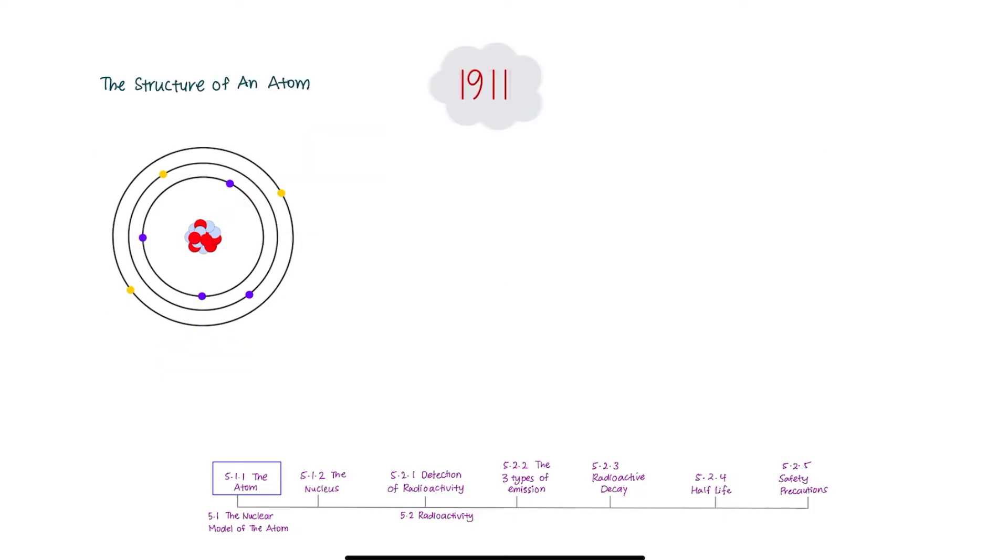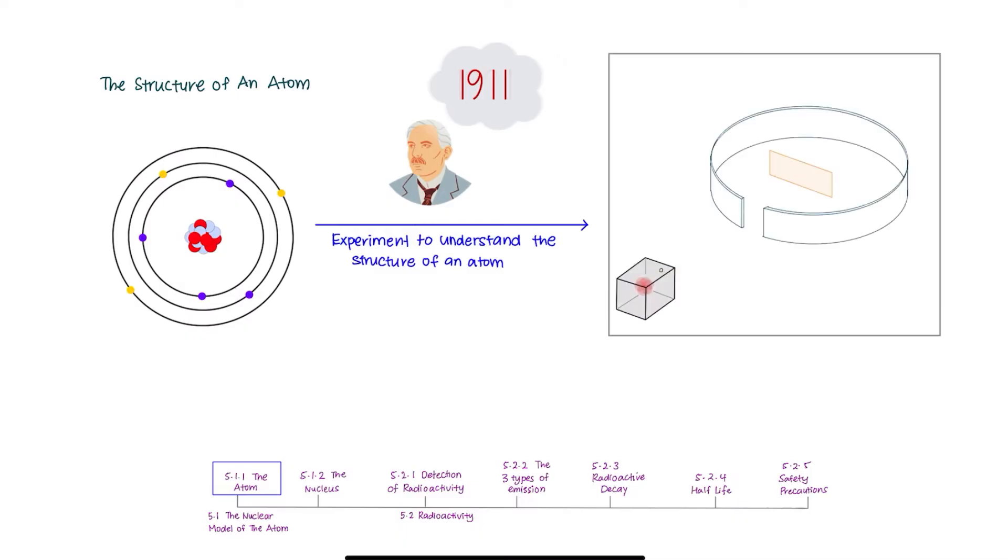Around the year 1911, a scientist called Ernest Rutherford carried out an experiment to understand the structure of an atom better. This is how the setup of the experiment looks like.